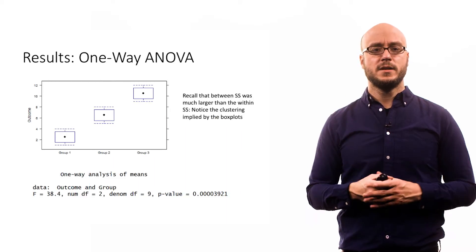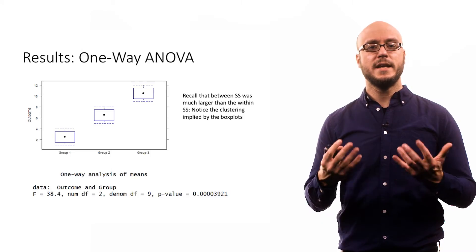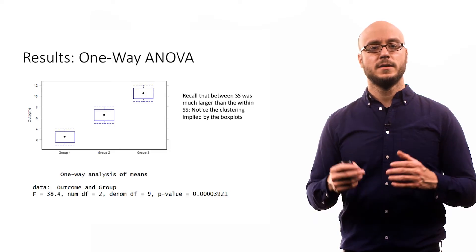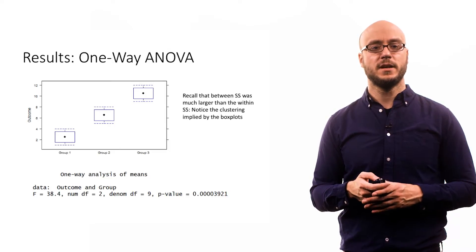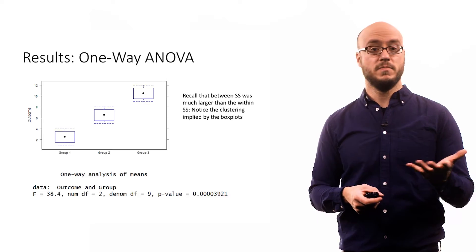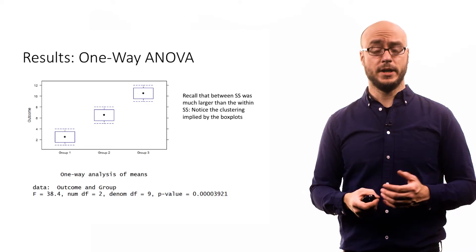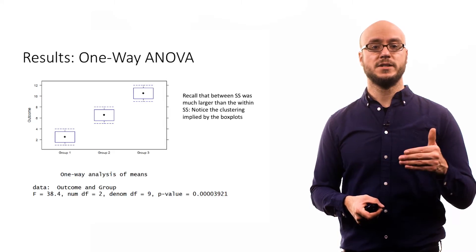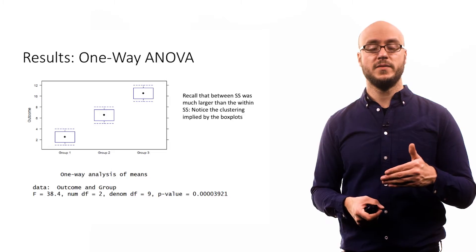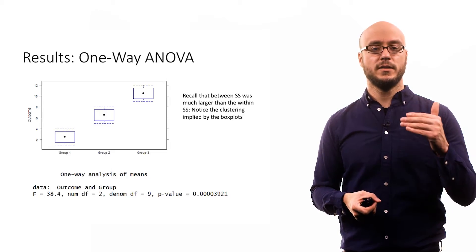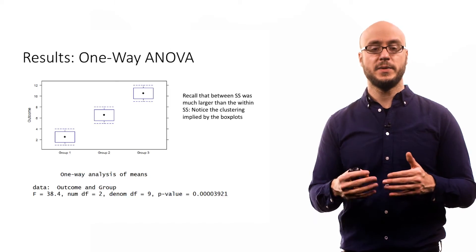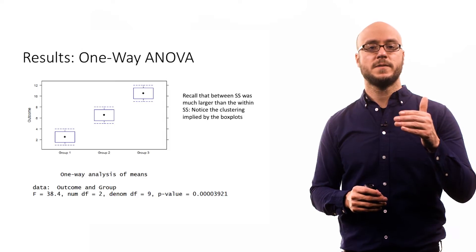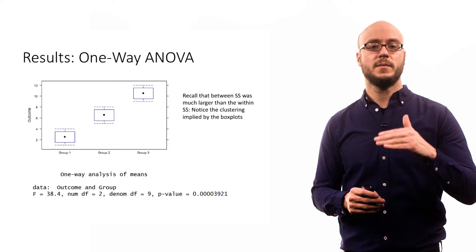When we conduct our analysis using statistical software, we get the output shown here, where it says one-way analysis of means. We have an F test statistic of 38.4. You can see that is roughly the same within rounding of what we calculated by hand. The output tells us we have degrees of freedom of 2 and degrees of freedom of 9. The statistical software frames this in terms of the numerator denominator. That's because the F test statistic is based on the mean squares between divided by the mean squares within.